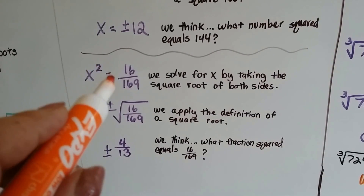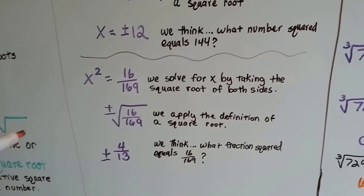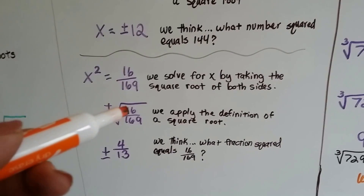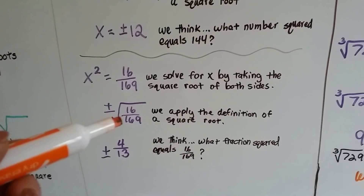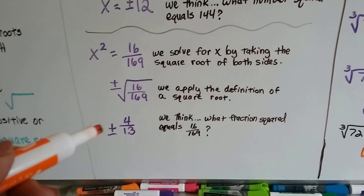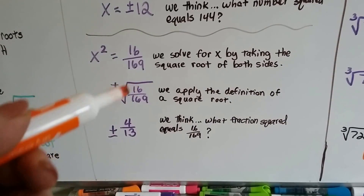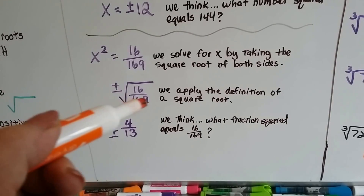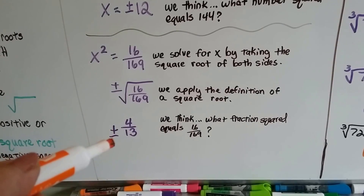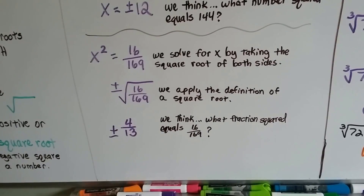And if we have a fraction like x squared equals 16 over 169, we do the same thing — we solve for x by taking the square root of both sides. It's a positive or negative. We apply the definition of a square root: what number times itself equals 16 over 169? We get 4 over 13, four-thirteenths. We can see 4 times 4 is 16, and 13 times 13 is 169. So it would be positive or negative 4 thirteenths, because two negatives can make a positive — either one can make that positive 16/169.